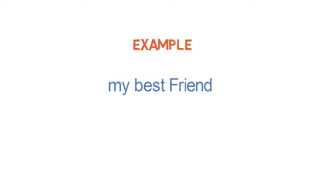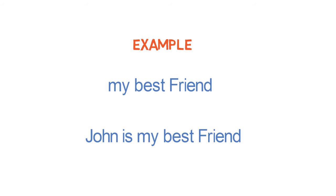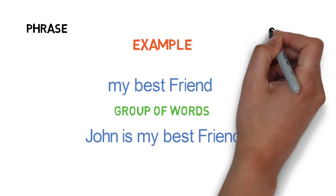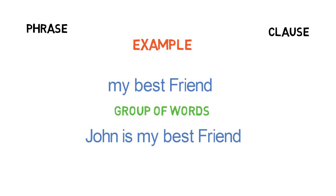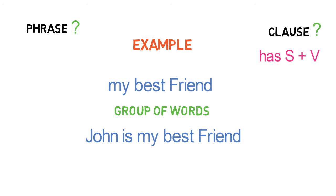Let's start with an example: 'My best friend' and 'John is my best friend.' Now, both of them are groups of words. One is a phrase and another is a clause. Can you identify which one is the phrase and which one is the clause? Here's a hint: the group of words which has a subject and a verb combination is a clause, and the one which doesn't have the subject-verb combination is a phrase.